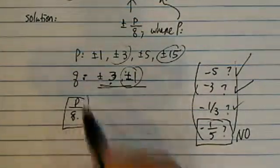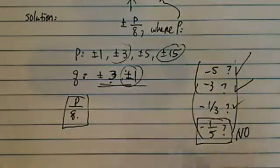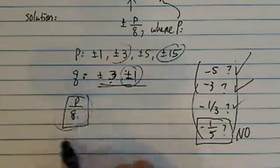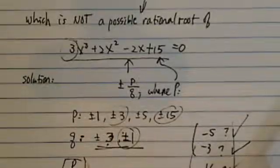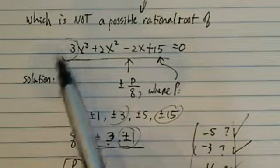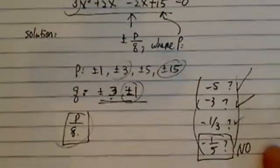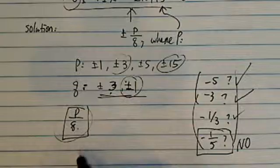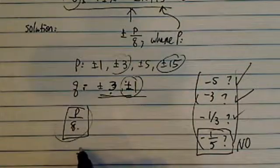Because it has to be in the form of p over q. A student always asks me, how do you remember it's p over q? How do we remember it's the possible factor of 15 divided by 3, not the other way around? A good way to think of it is, think of this long polynomial as a snake.